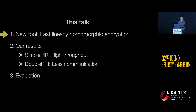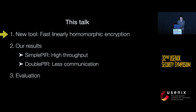In this talk, I'll first introduce a new tool: fast linearly homomorphic encryption with preprocessing. Then we'll use this to build SimplePIR, which achieves the highest throughput, and DoublePIR, which reduces communication somewhat. Finally, we'll evaluate these schemes.